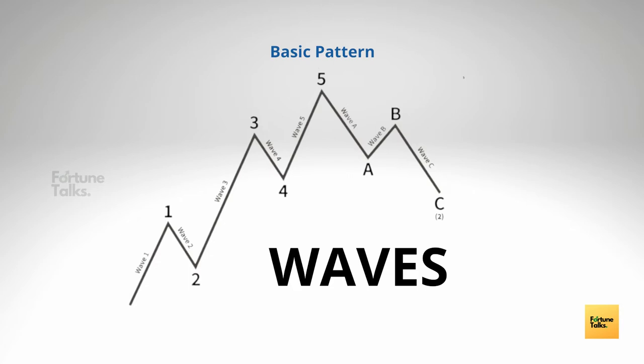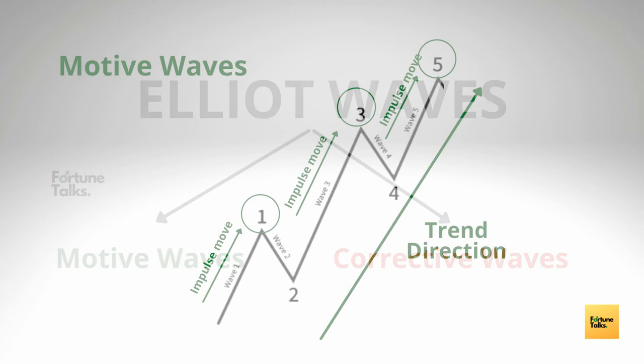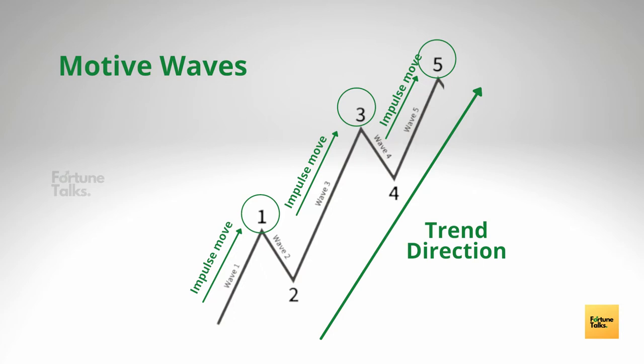These price swings, which form the same repetitive patterns in financial markets, are named as waves and they're formed by the traders' mass psychology. The Elliott Wave can be categorized into motive waves and corrective waves. Motive waves move in the direction of the main trend. If a stock is in an uptrend, the motive waves are in the direction of the uptrend. Motive waves consist of five waves labeled as wave 1, wave 2, wave 3, wave 4, and wave 5. Waves 1, 3, and 5 move in the same direction as the trend, whereas waves 2 and 4 move in the opposite direction.